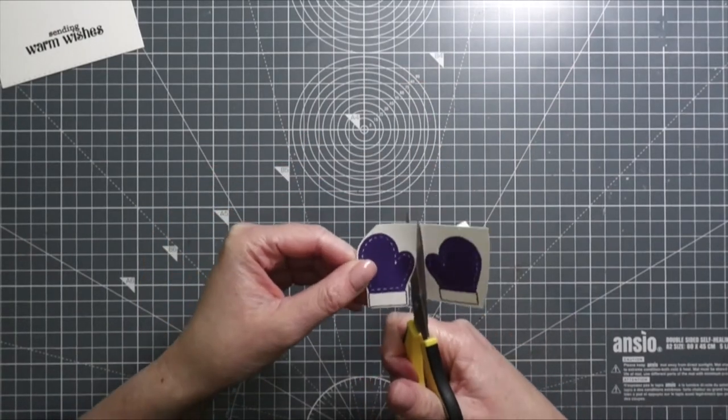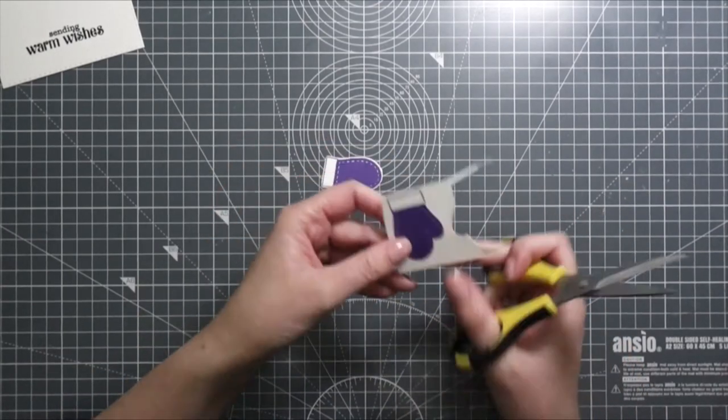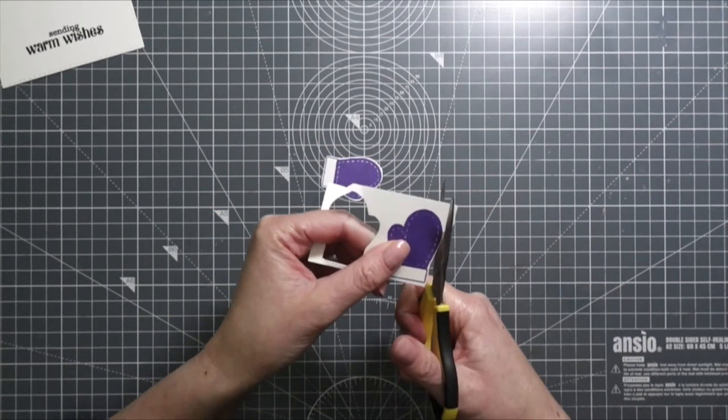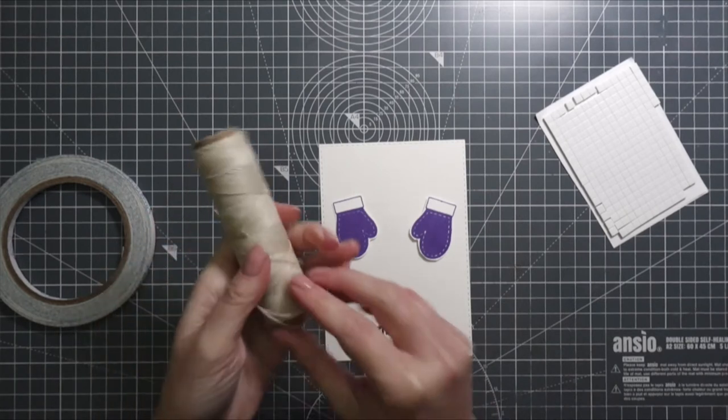After I stamped the mittens, I used my scissors to fussy cut them. I actually have the coordinating dies, and I don't really know why I bought them—fussy cutting is so much easier in this case. Next I adhered the mittens on the cutout slits for the gift card. Little tip: try to move the slits out a bit, then it's easier to put the gift card in.